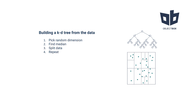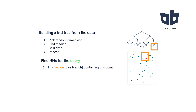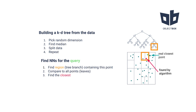How do we search with such a structure? First, we need to find the region — the tree branch — where our query is located. Then we compare all of the points inside of this region, the tree leaves, with our query using the metrics we discussed in the last episode. And finally, we find out which one of them is the closest one. Unfortunately, due to the approximation, it's possible that the value which you find is not the real closest neighbor.